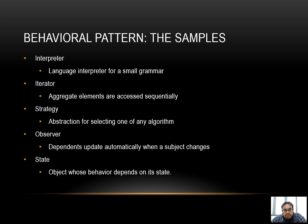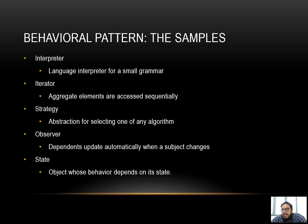The last type is the behavioral pattern, which involves the behavior of classes and objects. Examples include interpreter, iterator, strategy, observer, and state. For the strategy pattern, it involves the abstraction of selecting one algorithm from many. We have multiple algorithms that can be implemented in the system, but we must strategize on which algorithm solves the problem in a minimal way without affecting performance and memory. We choose the most suitable algorithm for that particular context — one that provides an optimal solution based on performance, memory, and speed in solving the problem.